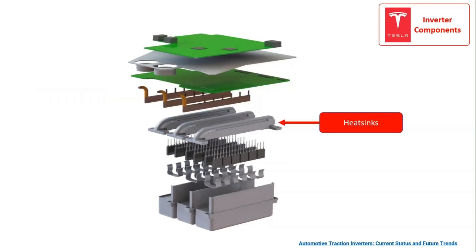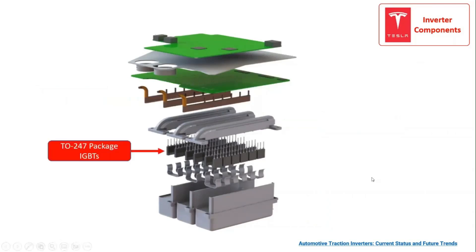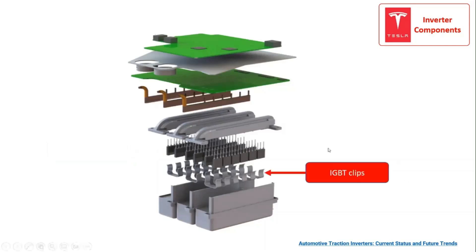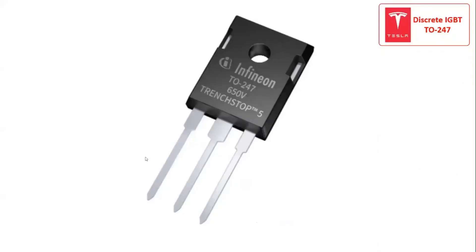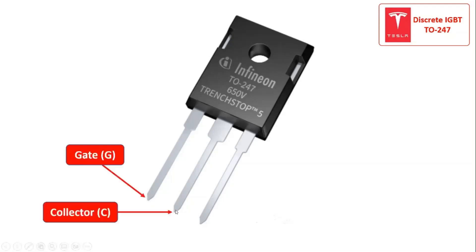Then, we have the heatsinks that enhance the heat dissipated from the IGBTs. The 36 IGBTs are attached to the heatsinks and connected to the PCB through the bus bars. The IGBTs are based on the TO-247 package, which is a three-lead through-hole device with a metal plate for a heatsink. Then we have the IGBT clips that connect the TO-247 packaged IGBTs to the DC-link capacitors. The IGBT, insulated gate bipolar transistor, takes the best parts of both BJT and MOSFET into a single transistor, taking the high input impedance of MOSFET and the output characteristics of BJT.